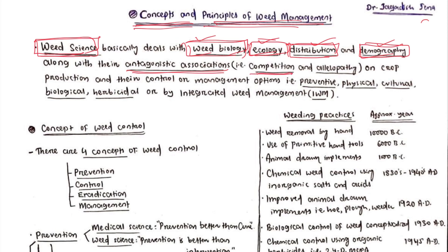Antagonistic association occurs through competition — that is the indirect effect, because weeds use the resource base available for the crop and thereby compete with crops. And allelopathy — that is the direct inhibitory effect by releasing certain allelochemicals on other crops. So this is the antagonistic association between weed and crop. To manage this antagonistic association, the management options may be preventive method, physical method, cultural, biological, herbicidal approach, or integrated weed management, which combines all these approaches judiciously.